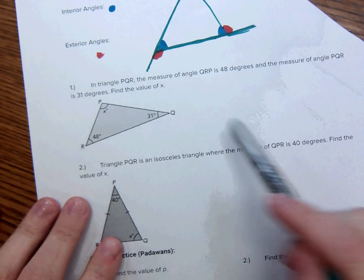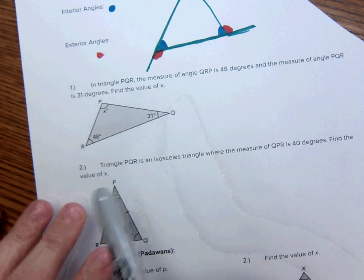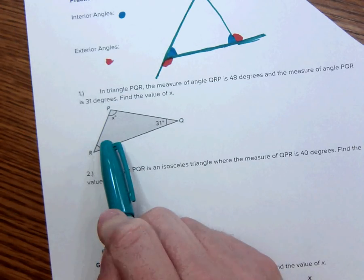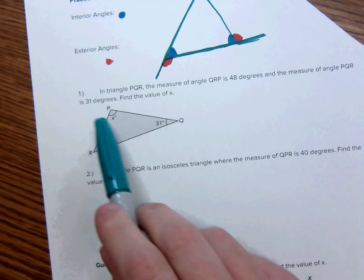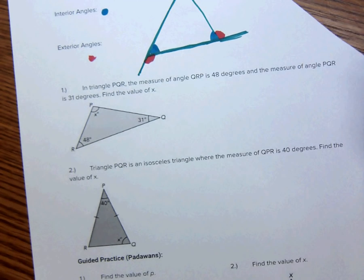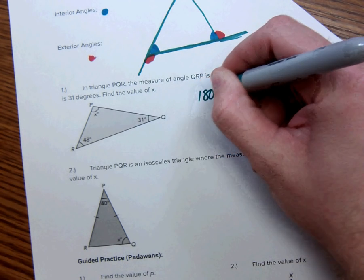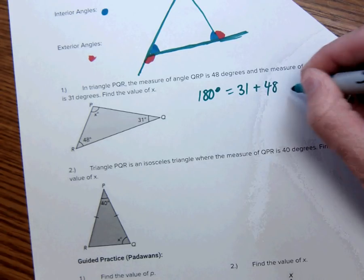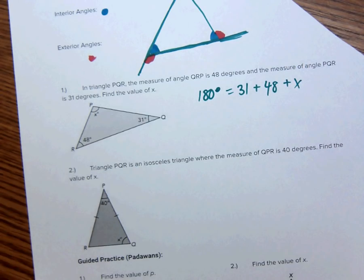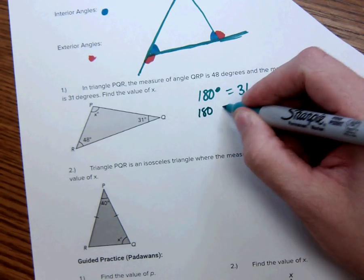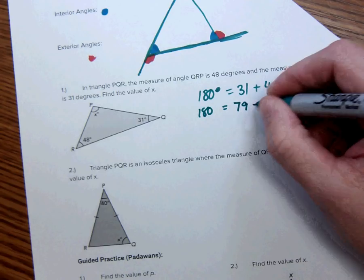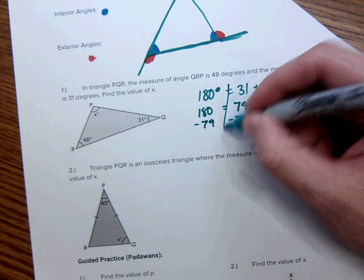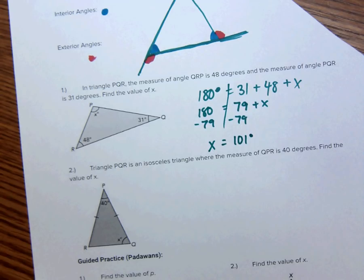First of all, we have a triangle. The measure of angle QRP is 48 degrees. This one over here is 31. Find X. As I showed you earlier, all the angles of a triangle add up to make 180 degrees. So, 180 degrees is equal to 31 plus 48 plus X. That means 180 degrees is equal to 79 plus X. Subtract 79, I get that X is equal to 101 degrees. Hooray.